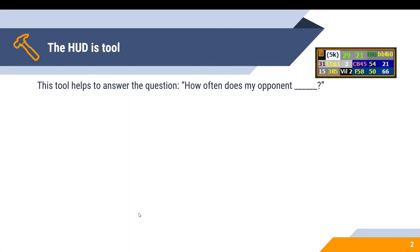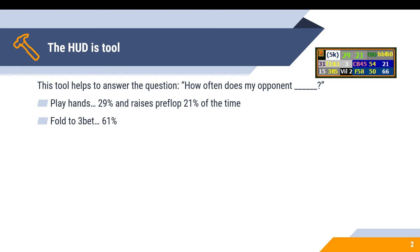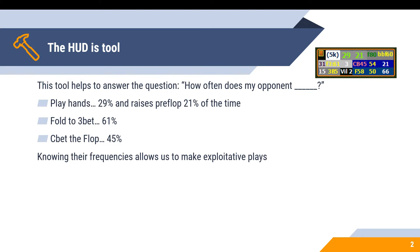The HUD is a tool — take a look at Villain 2 in the top right. We have over 5,000 hands on this villain and all their most important stats are right there. This tool helps to answer the question: how often does my opponent blank? They have a 29% VPIP and raise pre-flop 21% of the time. How often do they fold to a 3-bet? 61%. How often do they c-bet the flop? 45%. Knowing their frequencies allows us to make exploitative plays.